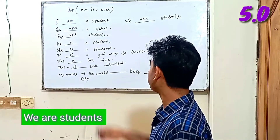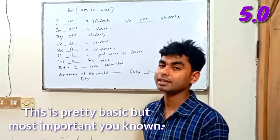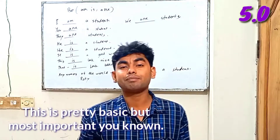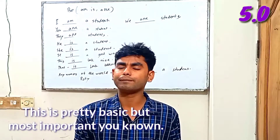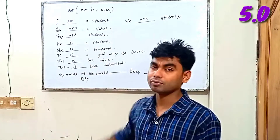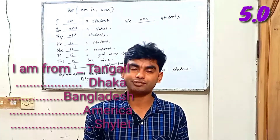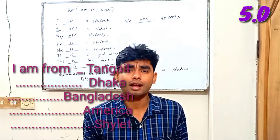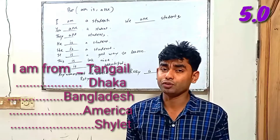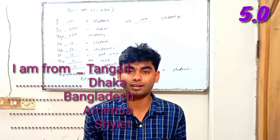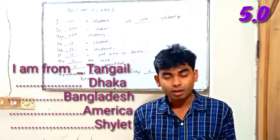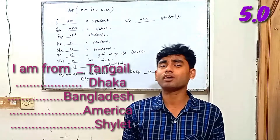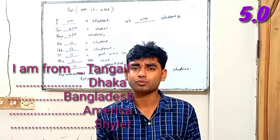So this is pretty basic — you can make this kind of sentence this way. Everything you have to learn from basic. This kind of sentence we are always going to use as English speakers: 'I'm a student', 'I'm from Dhaka', 'I'm from Bangladesh', 'I'm from America', 'I'm from Chile' — this kind of thing we always want to use.